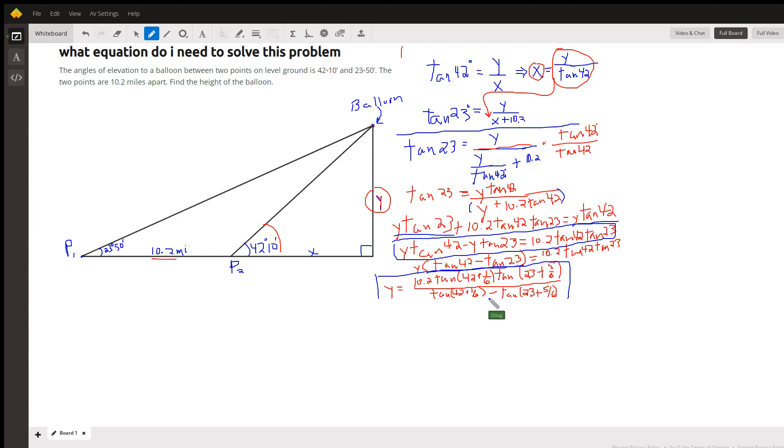And notice that this time I've replaced 42 with 42 plus 1 sixth. That's how you convert 10 minutes to degrees. 10 sixtieths or 1 sixth and 50 minutes is the same as 5 sixths of a degree.